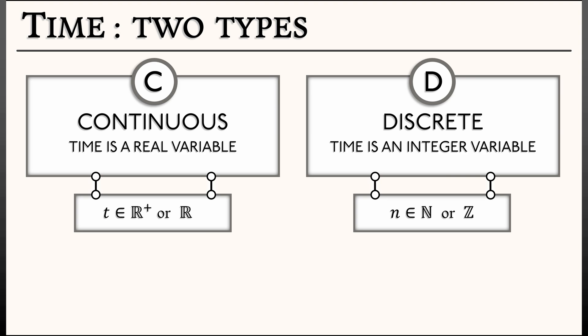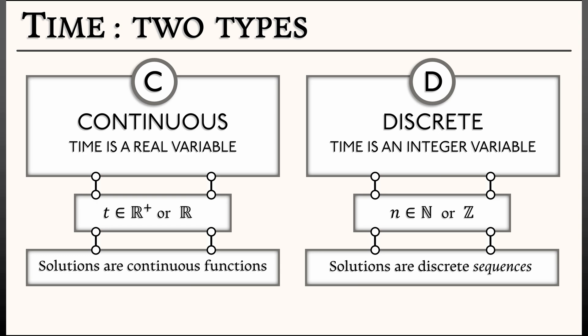The solutions to these two different types of dynamical systems really differ. In continuous time, you're going to have what looks like a continuous function of a continuous variable t. Whereas in a discrete time dynamical system, solutions are going to be discrete functions, that is, sequences, that depend on this discrete time n.